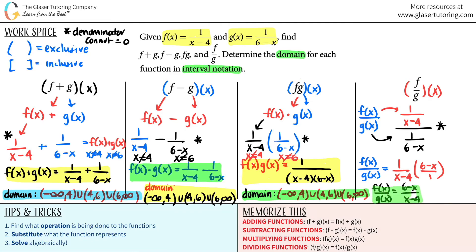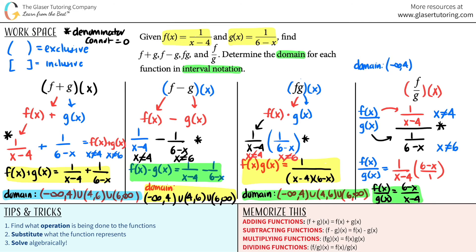This is a great example of why you do not use the simplified version for your domain. If I used the simplified version, I would only see x cannot equal 4. But going back to the unsimplified version, the 6 minus x was still a denominator, so x cannot equal 6 either. So the domain is the same: negative infinity to 4, union 4 to 6, union 6 to positive infinity. Always use your original unsimplified function for domain, not the simplified version.